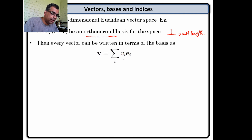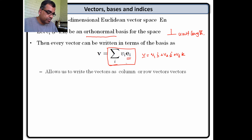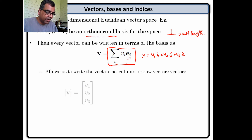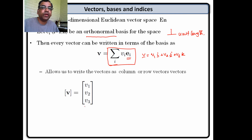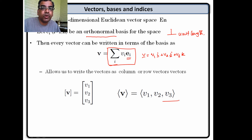Every vector can be written in terms of the orthonormal basis. For example, we are used to writing v equal to v1 i plus v2 j plus v3 k. Instead, we can write it as v_i E_i with summation. The nice thing about writing things in an orthonormal basis is that I can write a vector v either as a column vector or as a row vector, and we do not worry about which it is. That is the nice thing about orthonormal basis.